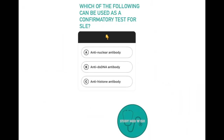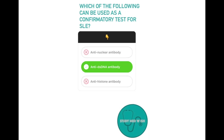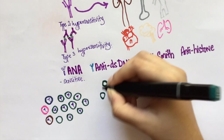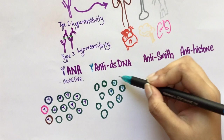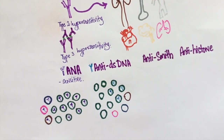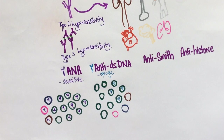Which of the following can be used as a confirmatory test for SLE? Option A anti-nuclear antibody, option B anti-dsDNA antibody, option C anti-histone antibody. The correct answer is anti-dsDNA antibody. Confirmatory tests have to be highly specific. Anti-dsDNA antibody and anti-Smith antibodies are highly specific for lupus, meaning that if these antibodies are found in a person there is an extremely high chance they have lupus. These antibodies are not found in other conditions. Note that not all patients with lupus will have these antibodies, hence they are not very sensitive.